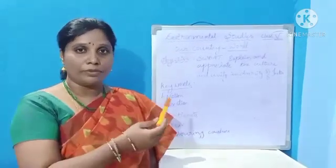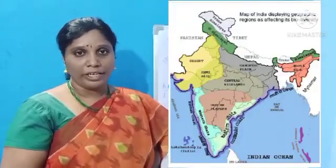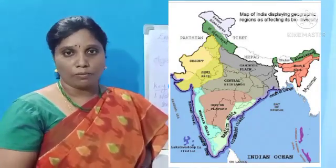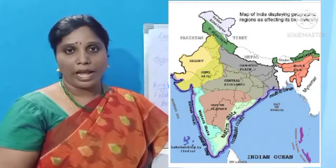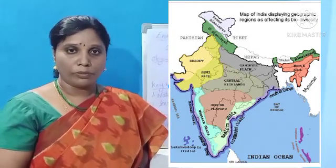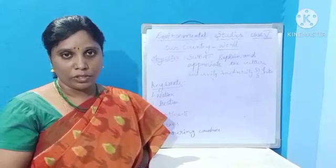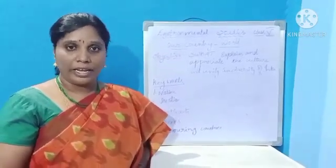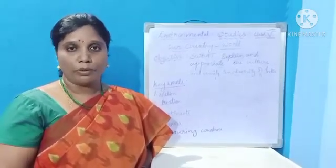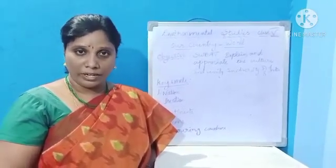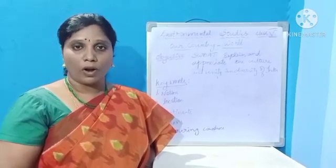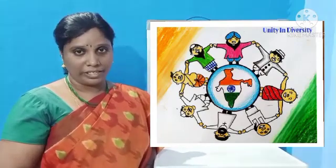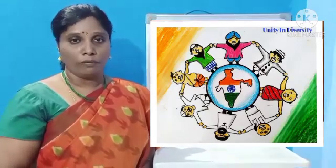Children, observe the physical map of India. Here we find different physical features: mountains, plateaus, and plains. We the people live in these regions, so our food habits, dressing style, and languages differ. Even though the people of India are different, we are all called as Indians. This shows the unity in diversity, which is a role model for the whole world.